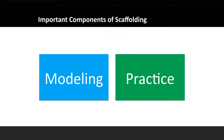There are two important components of scaffolding: modeling and practice. The first step in scaffolding is modeling. Throughout the scaffolding process, the instructor is modeling each step in the task or strategy as many times as necessary while talking through their thought process during each step. Modeling helps students know how to accomplish the task and why each step is necessary — we're explaining this to them, not just giving them a graphic organizer and telling them to go do it. Knowing the how and the why of a process promotes student success.